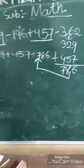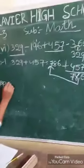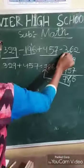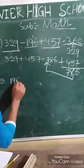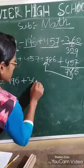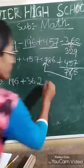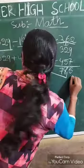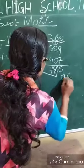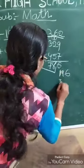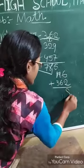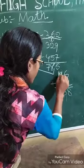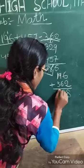Step 2: Add the numbers that have a minus sign before them — that is 196 plus 362. Arranging: 6 plus 2 is 8. 9 plus 6 is 15, write 5 carry 1. 1 plus 3 is 4, plus 1 is 5. So 196 plus 362 equals 558.